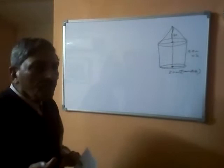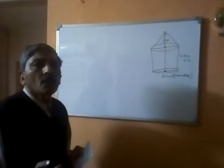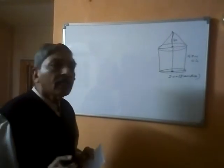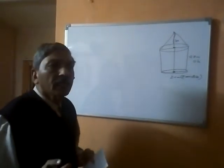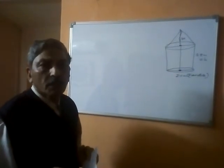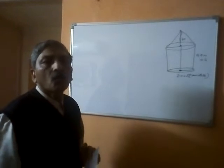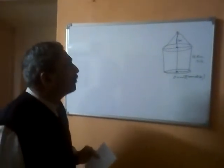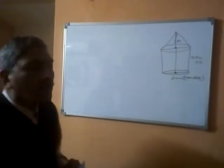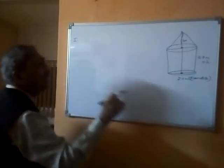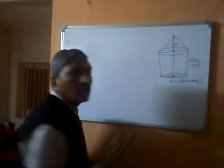Now if we have such a tent, what we need to find out is the total area of this tent. And if we know the area, and if we know how much canvas will be required, we can figure out what will be the cost of the canvas. To approach this problem, we first need to know the curved surface area of the cylinder.